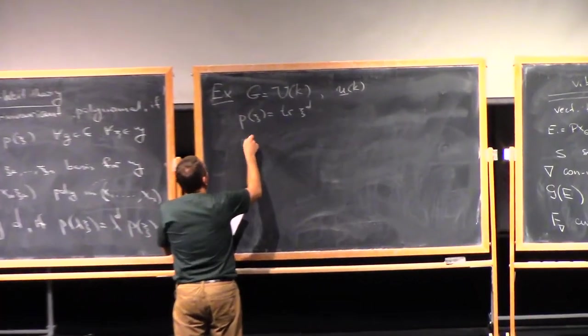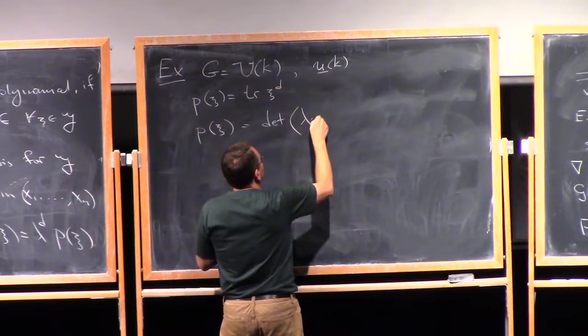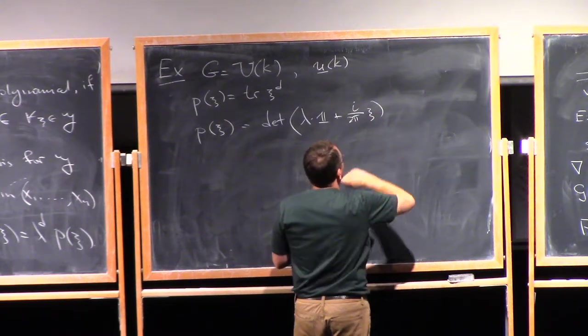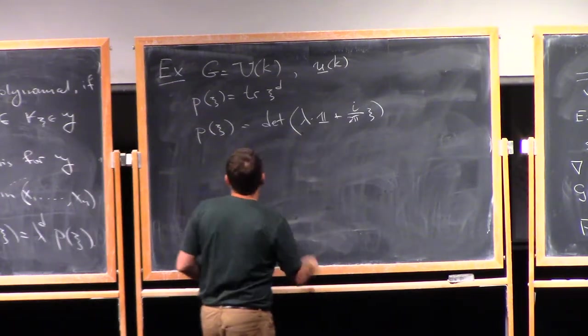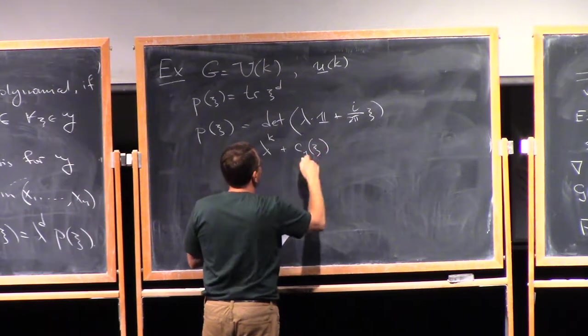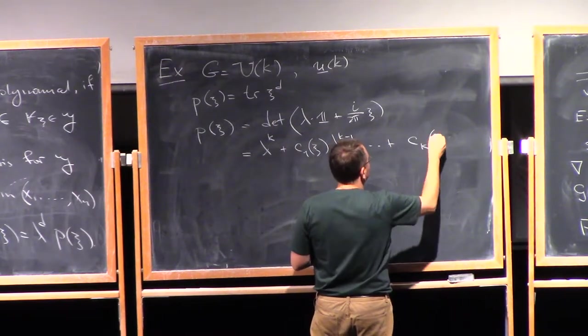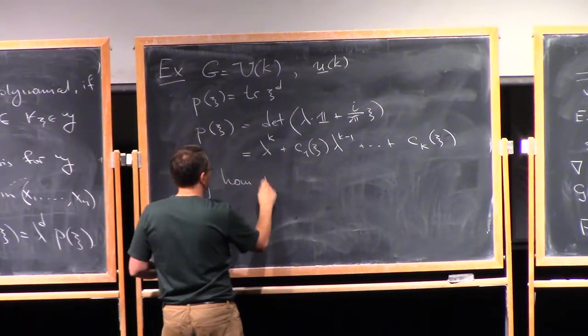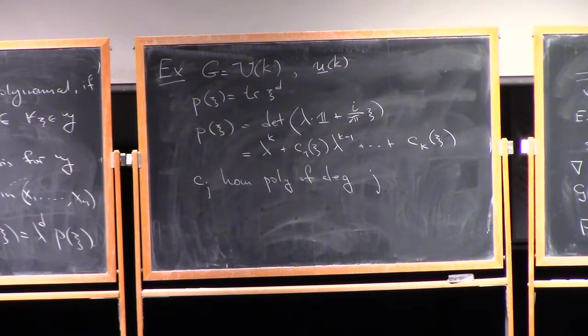Now, more importantly, we can take P of xi to be the determinant of lambda times 1 plus i over 2 pi xi. And so now we have a parameter lambda here, so if we expand this in lambda, we will get an expression like lambda to the power k plus c_1 of xi lambda to the power k minus 1 plus, and so on, c_k of xi. Now, these are homogeneous, so each c_j is a homogeneous polynomial of degree j.